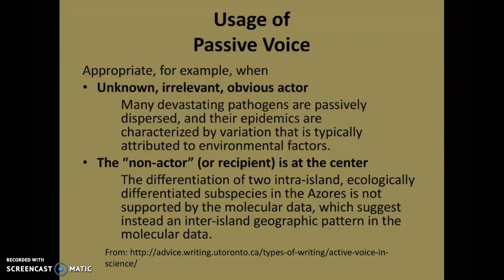Two more examples of when passive voice might actually work in your favor: when you have an unknown, irrelevant, or obvious actor. For example: 'Many devastating pathogens are passively dispersed and the epidemics are characterized by variation that is typically attributed to environmental factors.' If I wanted to change 'are passively dispersed' and 'are characterized' but don't know who is doing the dispersing or characterizing — and that's not as important as the pathogens and the epidemics — then those elements should be in the subject position, meaning passive voice is the right choice. When writing your papers, think strategically about where to use active voice and where passive voice might be better.